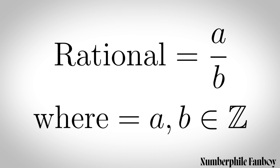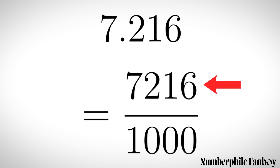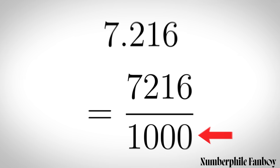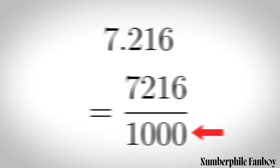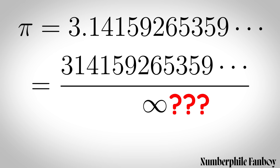Rational numbers are any number that can be represented as an integer a over another integer b. Any number that can be written down in full including all the decimal digits is rational, because it can be represented by the number without the decimal point over a power of 10. But numbers like pi go on forever, so you can never represent them as an integer over another integer.